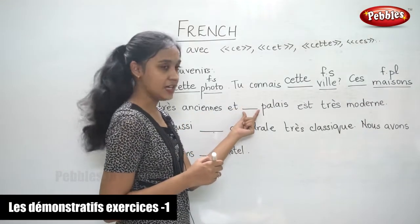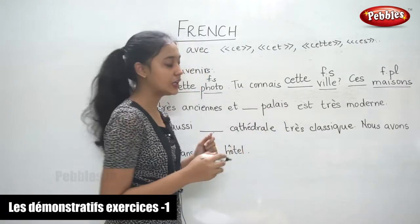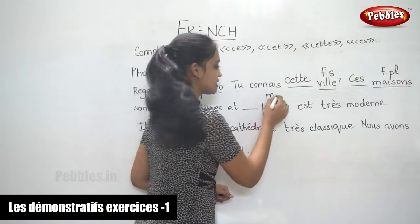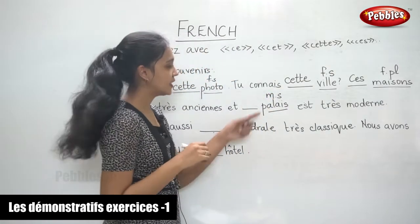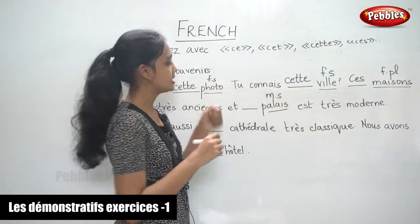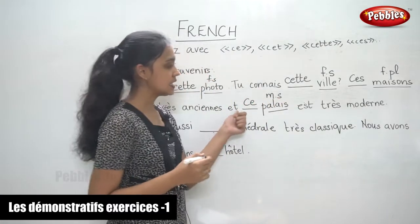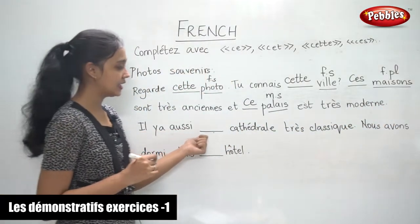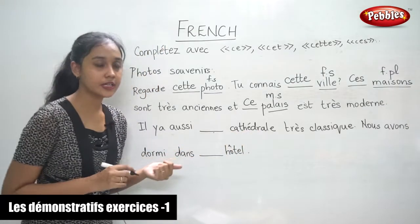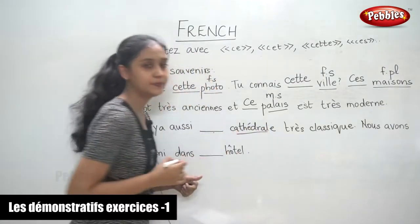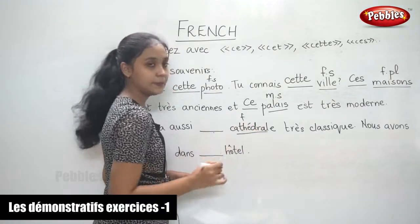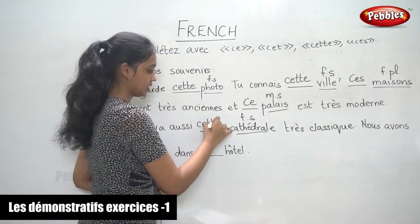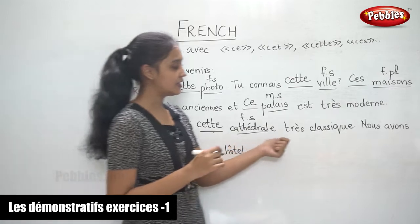Et dash palais. Now the noun here is palais. It is masculine singular. So when it is masculine singular, we use ce. Ce palais est très moderne. Il y a aussi dash cathédrale. So now the noun is cathédrale. It is feminine singular, so we fill in cette. Cette cathédrale, très classique.